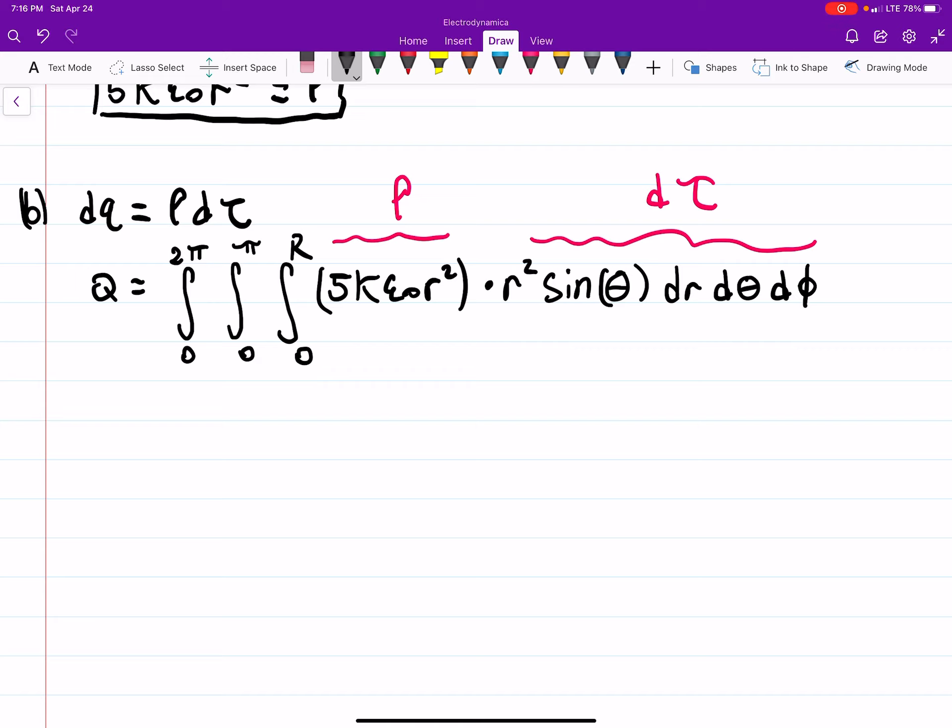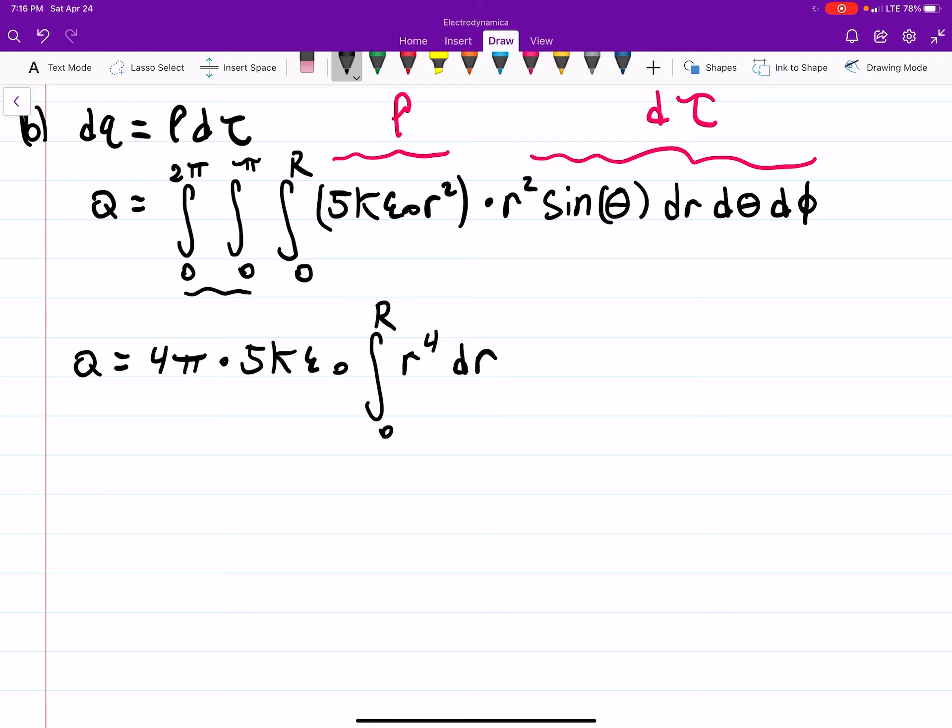With that in mind, all we have to do is evaluate this. So q will be equal to... d theta d phi will give you 4 pi when you integrate over these bounds. We can pull out the 5k epsilon naught, those are just constants. And we're left with the integral from 0 to r, r-squared times r-squared is r to the 4 dr. Then we do a quick power rule.